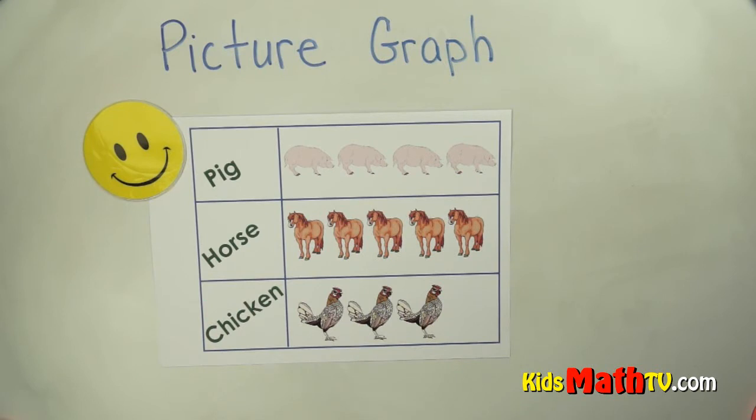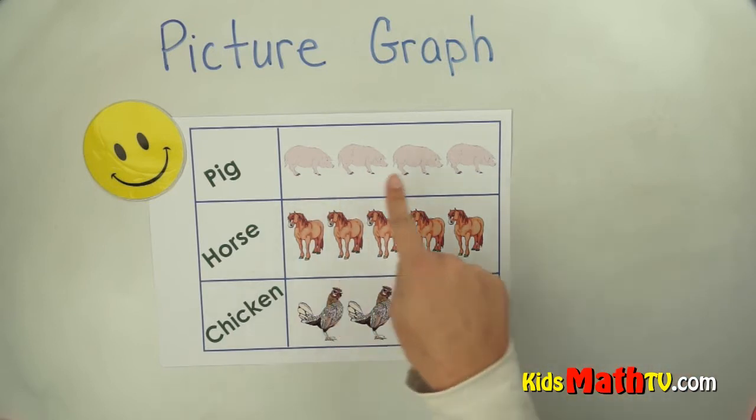Here are all the pigs that she saw, here are all the horses that she saw, and here are all the chickens that she saw. So what I'm going to do is read this graph and find out how many of each animal she saw. To read this graph, I simply count.